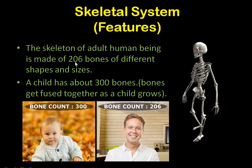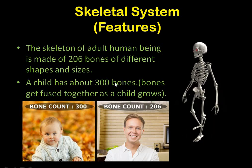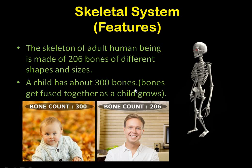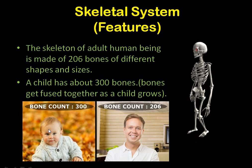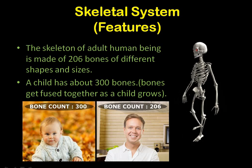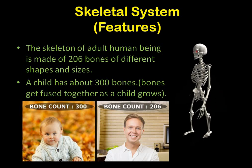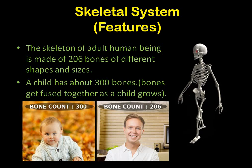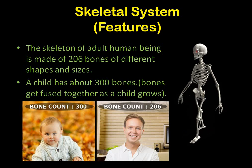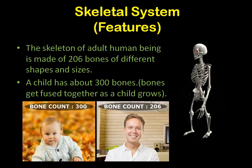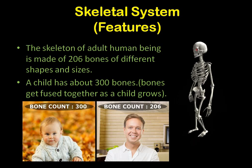There are different types of bones, but remember the number 206 — that is the number of bones in the adult human being. A child has about 300 bones. How come a child has 300? When a child is born, the bones of the skull are not joined together — they are not fused together, so they are all individual bones.